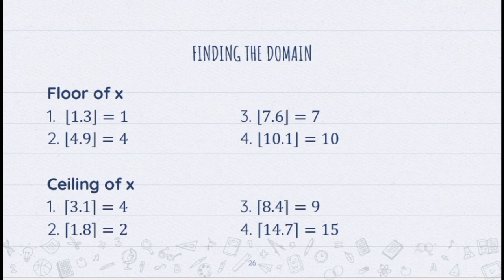For example, we have here 1.3 goes down to 1, 4.9 however very close to 5 still goes down to 4, 7.6 goes down to 7, and 10.1 goes down to 10.